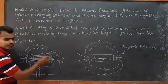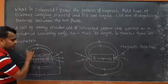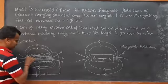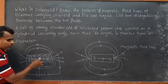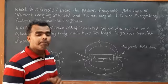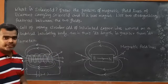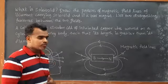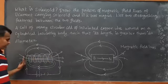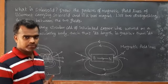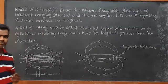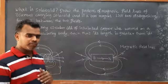Outside the solenoid, the magnetic field decreases drastically. In between the two ends, the magnetic field is uniform. But exactly at the ends of the solenoid, the field becomes half the maximum value. For example, if the field inside is 2 tesla, at the ends it becomes 1 tesla, and outside it continues to decrease.